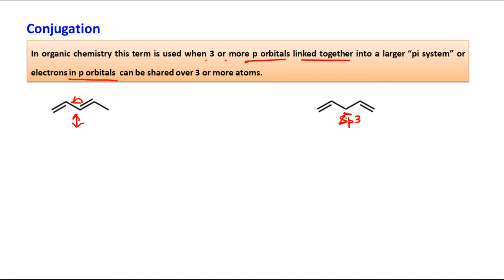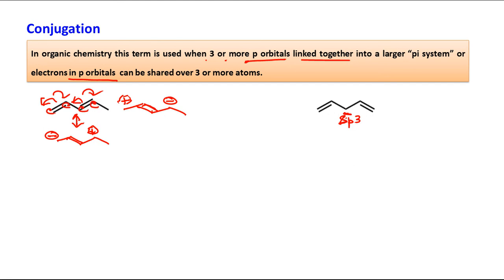After conjugation, you can draw resonance arrows — and you can also draw these arrows in the reverse direction. So you get a negative charge here, a C=C double bond, and a positive charge; or in reverse, positive charge, C=C double bond, and negative charge. Both are fine. In this case there are total two pi bonds present, but all carbon atoms are sp2. With four p orbitals linked together into a larger pi system, we can extend the double bond to the next carbon.